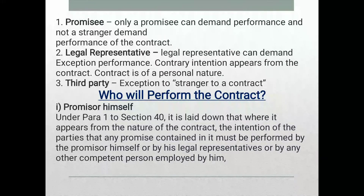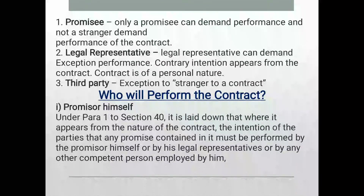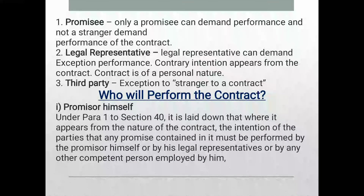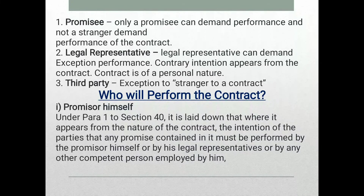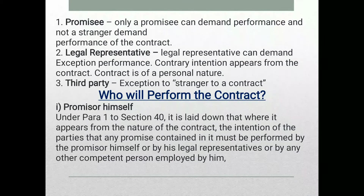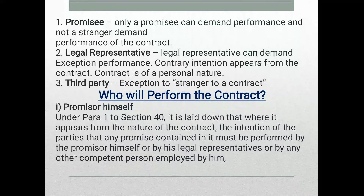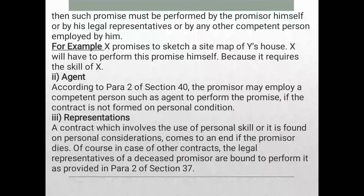A third party may also be a stranger to the contract. Who will perform the contract? The promisor himself — Section 40 lays down that where the nature of a contract requires personal performance, it must be performed by the promisor himself, or his legal representative, or by any other competent person employed by him.